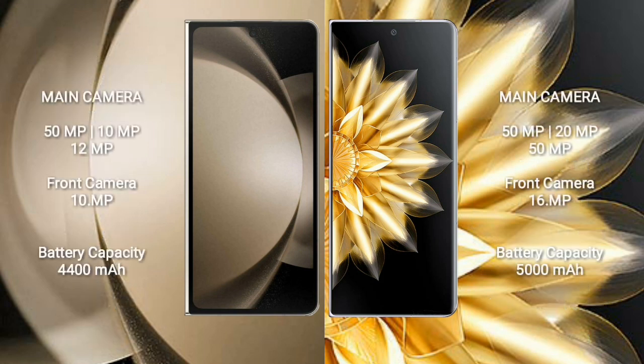Samsung Galaxy Z Fold 5 has a rear triple camera setup: 50MP + 10MP + 12MP, and a front camera of 10MP. Samsung Galaxy Z Fold 5 has a 4,400mAh battery with 25W fast charging support. Honor Magic V2 has a 5,000mAh battery with 66W fast charging support.